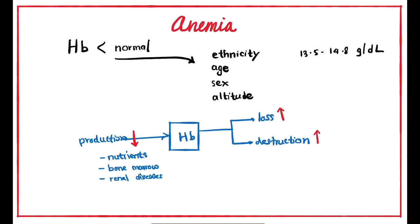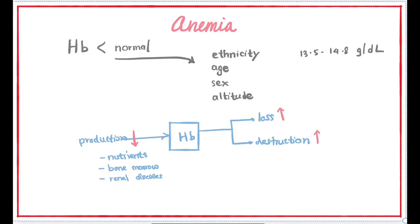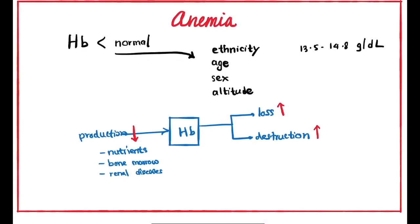If we have nutrients that are deficient in an anemic condition, we can see hemoglobin loss through hemorrhages. Hemorrhages are classified as acute hemorrhages and chronic hemorrhages. Chronic hemorrhages are particularly important to consider in anemia.